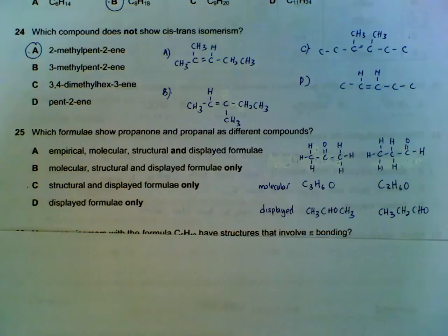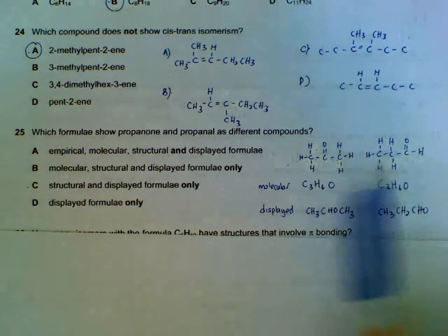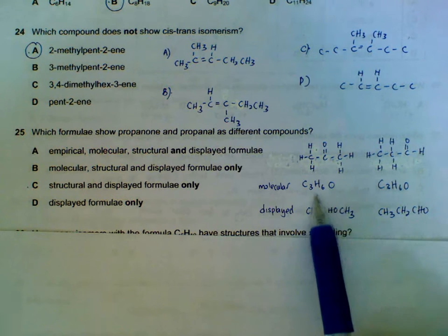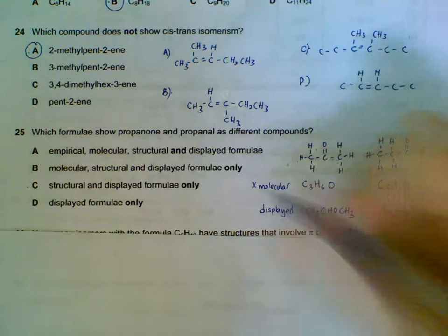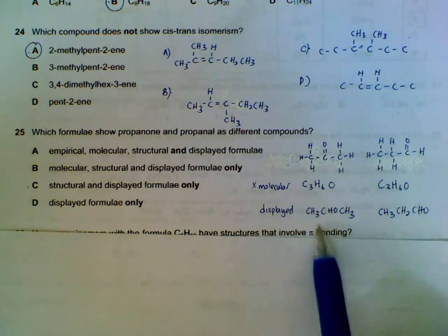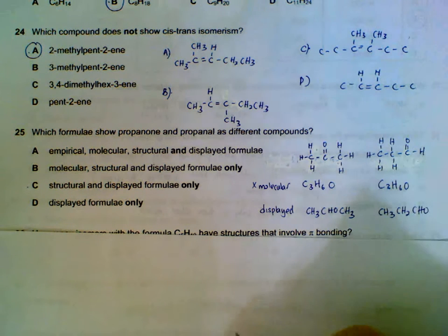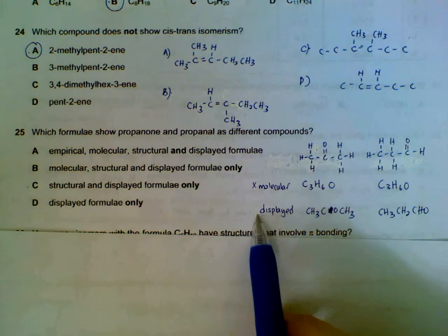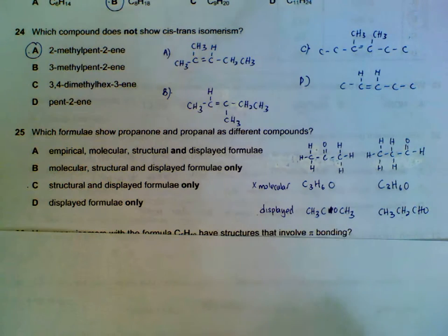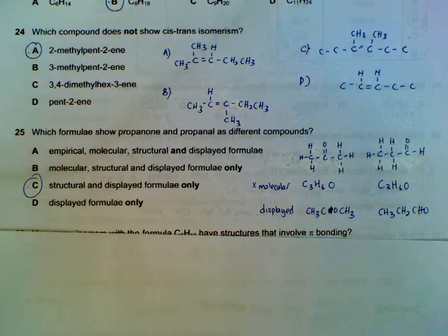25, propanone and propanol, ketone and aldehyde. What shows them to be the difference? So if we draw the displayed or the structural formula, we can see that there are actually different compounds. So structural formula is different. Molecular formula is the same, C3H6O. So that one can't tell us that there are different compounds. Displayed formula, we have to go in order. Using the displayed formula, we can actually see that there are different compounds. So displayed will tell us that they are different. Structural will tell us that they are different. If they have the same molecular, they will have the same empirical anyway. So empirical formula will be the same for both.